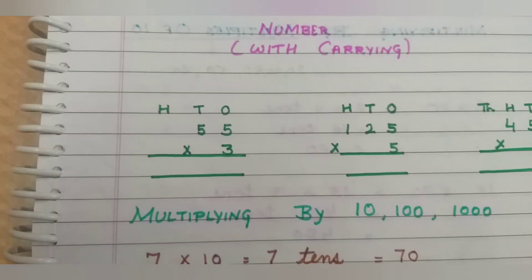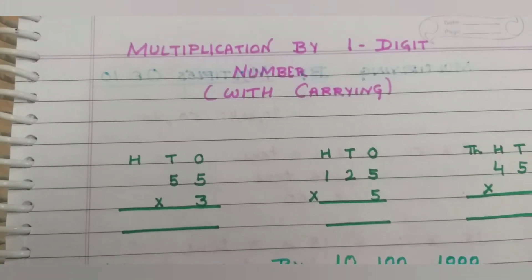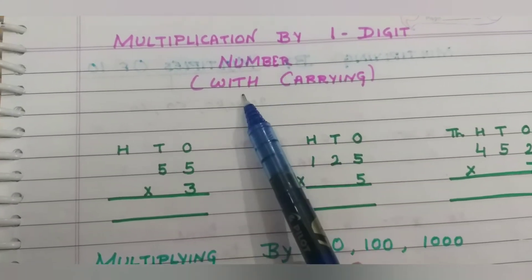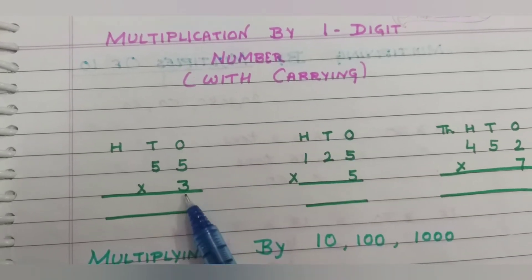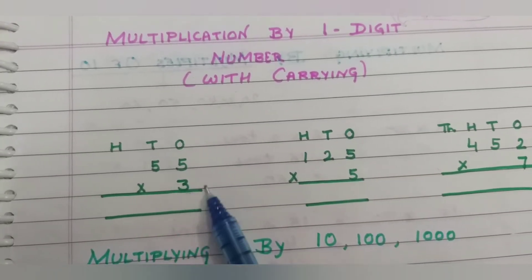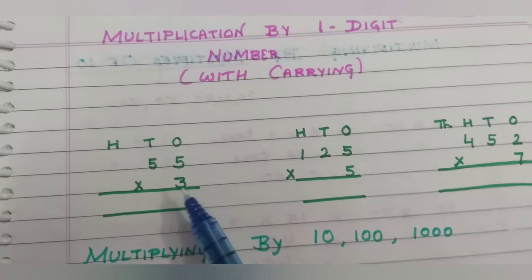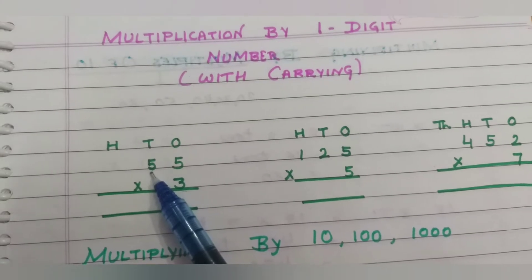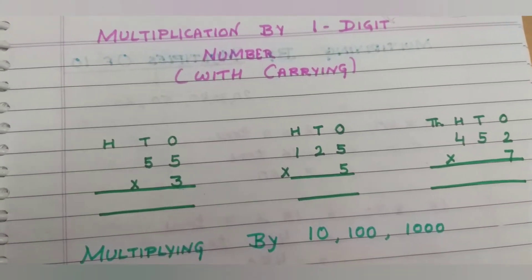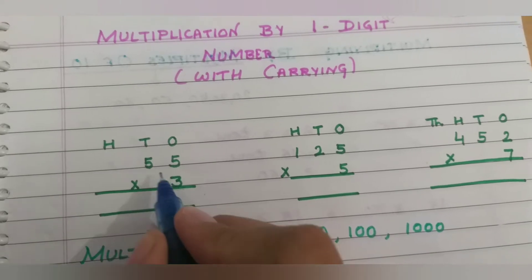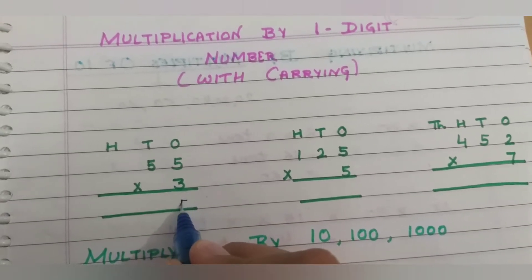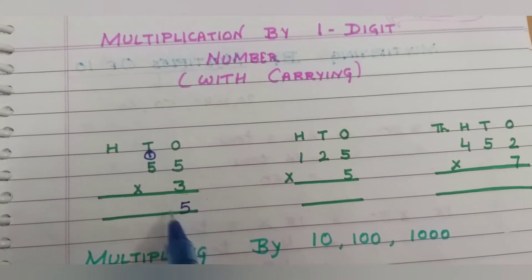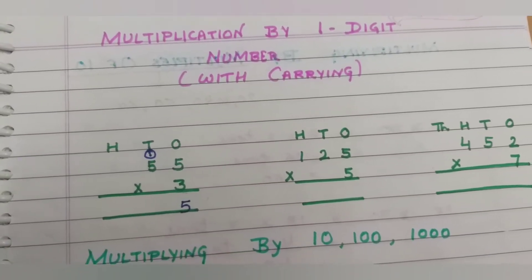Hello everyone. Today we are going to learn multiplication by a one digit number, that is with carrying. While multiplying by a one digit number, we need to multiply the ones and after that multiply by tens. Let's multiply the ones. Three fives are fifteen. Here we will put one carry — we will write five here and one will be carry.